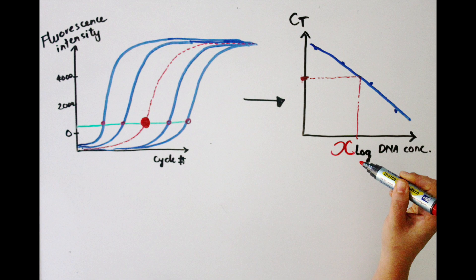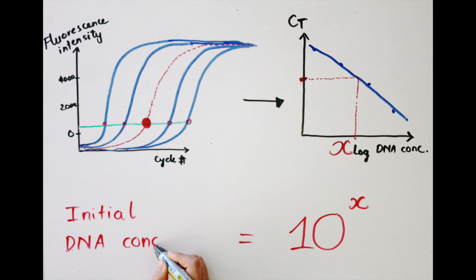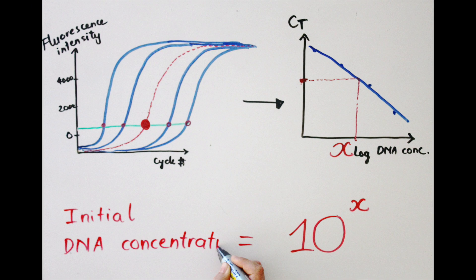Using the standard curve, you can find out the log concentration of your DNA sample to be X. As this is in log scale, you can simply calculate your sample DNA concentration to be 10 to the power of X.